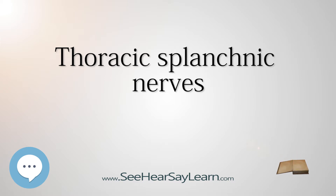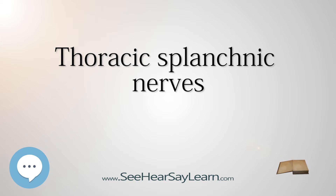The greater splanchnic nerve originates from T5-T9 or T5-T10. The nerve travels through the diaphragm and enters the abdominal cavity, where its fibers synapse at the celiac ganglia. The nerve contributes to the celiac plexus, a network of nerves located in the vicinity of where the celiac trunk branches from the abdominal aorta. The fibers in this nerve modulate the activity of the enteric nervous system of the foregut.